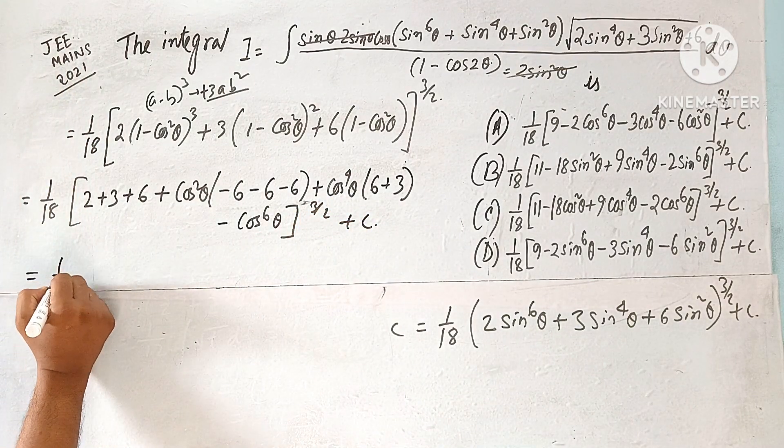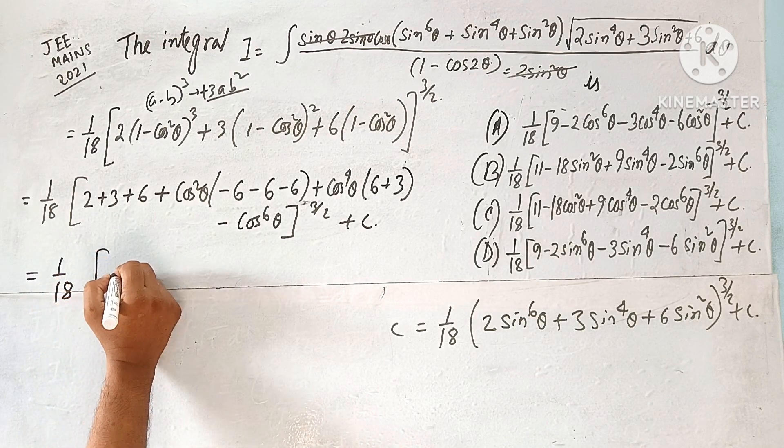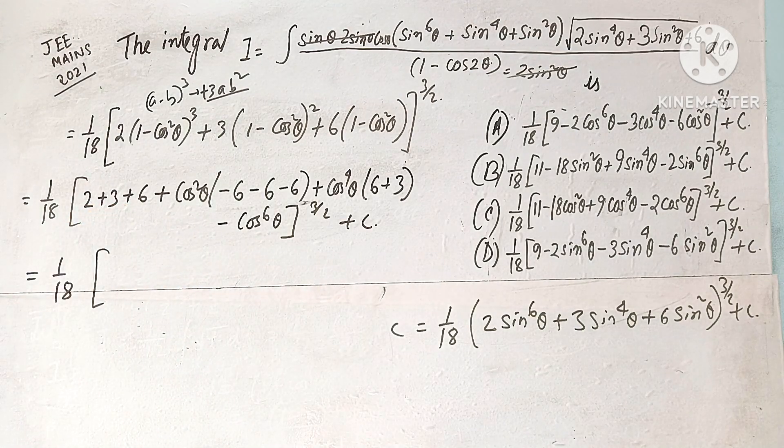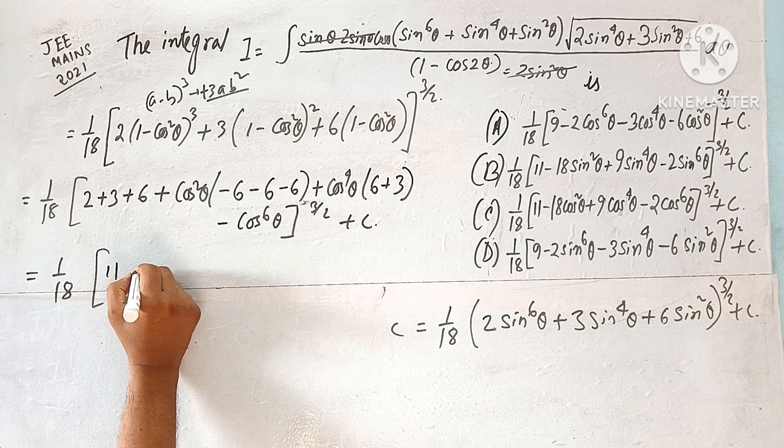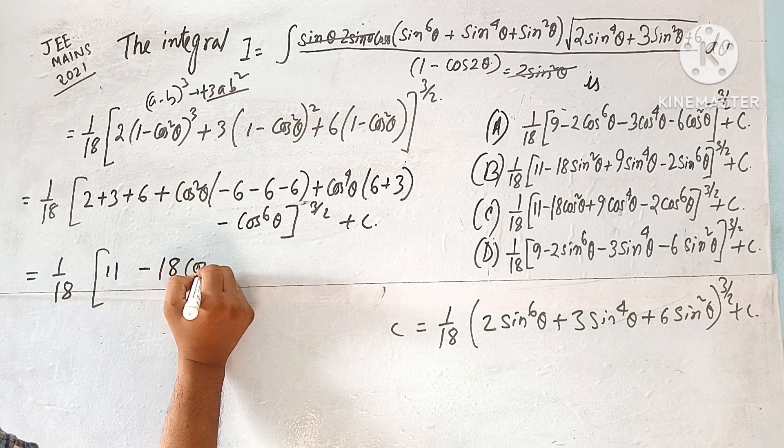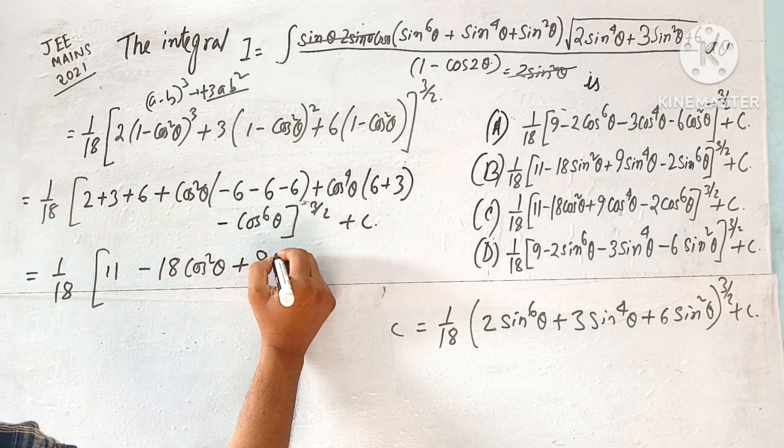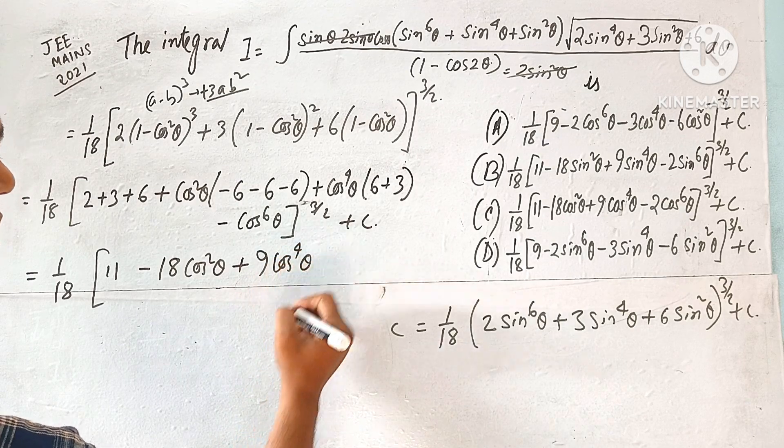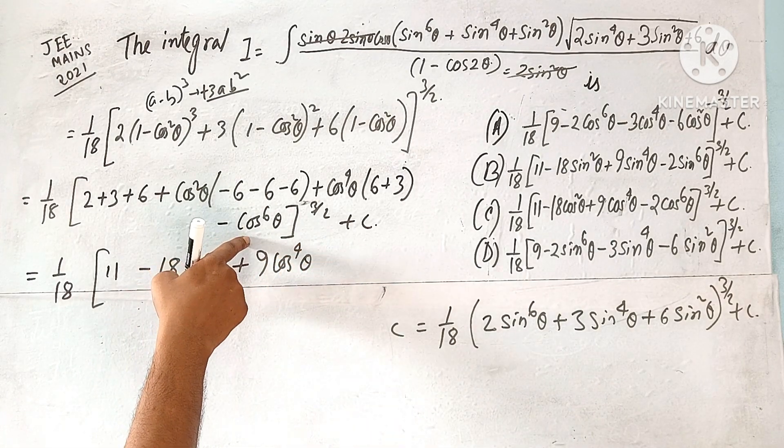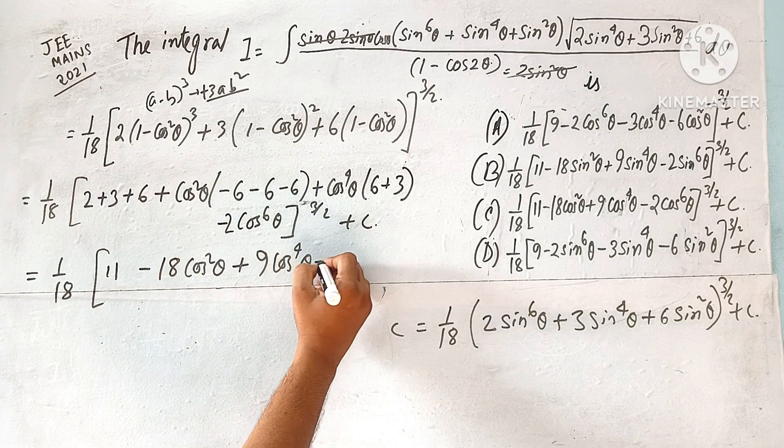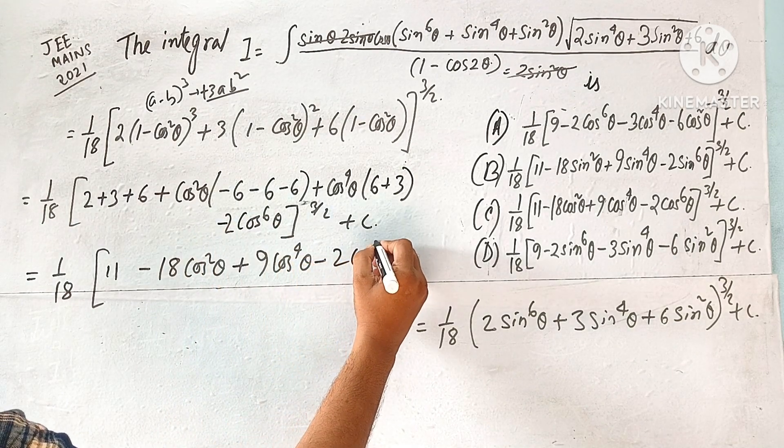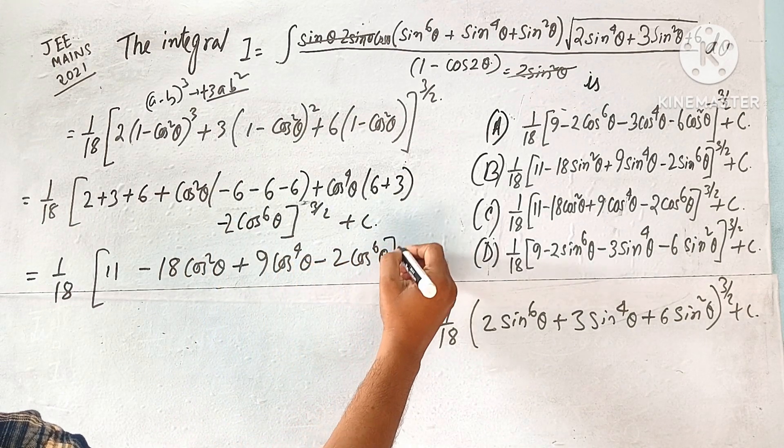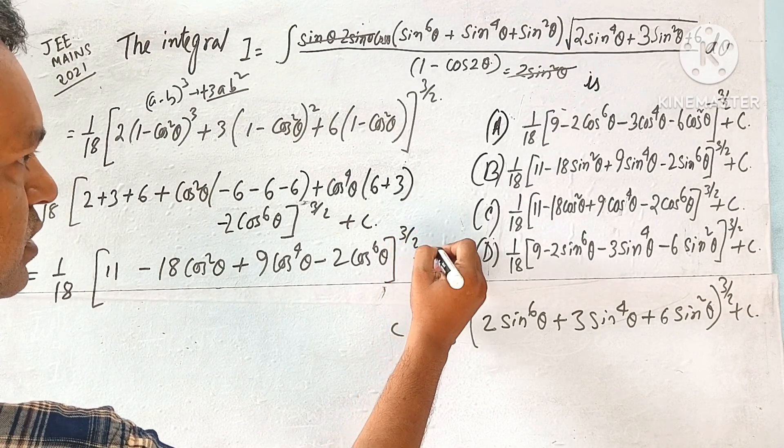So 1 by 18, 11 minus 18 cos square θ, plus 9 cos to the power 4 θ, to the 2 θ, minus 2 cos to the power 6 θ, 2 to the power 3 by 2 plus C.